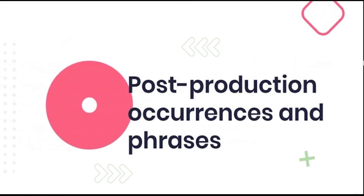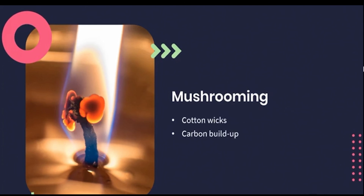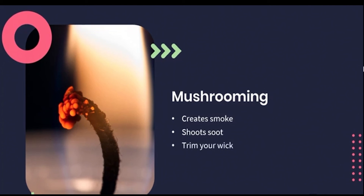Mushrooming is a very common occurrence in cotton-wicked candles. A collection of carbon builds up at the tip of the wick when it has been burning for too long a time. This creates a very distinct mushroom shape at the tip of the candle wick. It usually causes the candle to give off a large amount of smoke and sometimes shoots small pieces of soot onto surrounding surfaces. For this reason, it is incredibly important to trim your wick before each lighting of your candle. Prevention of mushrooming is very important when cultivating a functional burn.